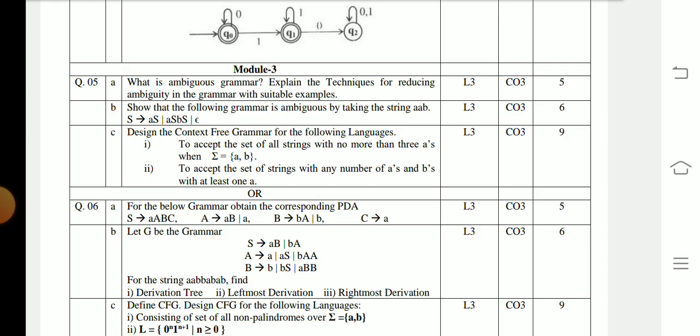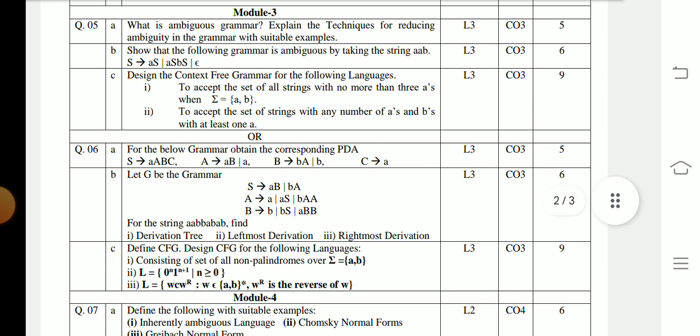Question 5b: Show that the following grammar is ambiguous by taking the string 'aab' — the grammar is given and you have to show that it is ambiguous. Question 5c: Design the context-free grammar for the following languages. First, to accept the set of all strings with no more than three a's when Σ = {a, b}.